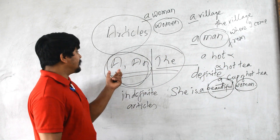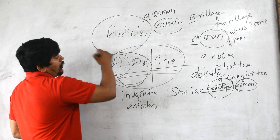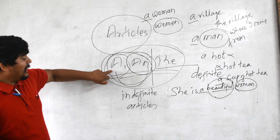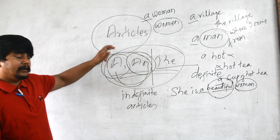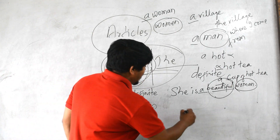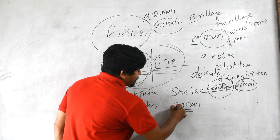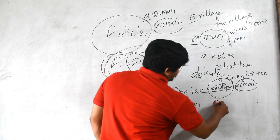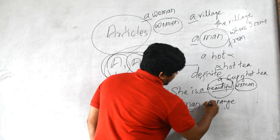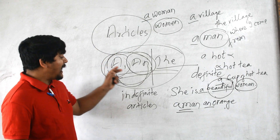Now let's separate a and an. We use a before a word having a consonant sound — for example, 'a man' because the m sound is a consonant sound. Likewise, we say 'an orange' because the vowel sound comes at the beginning. You are allowed to use a before consonant sounds and an before vowel sounds.